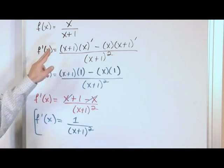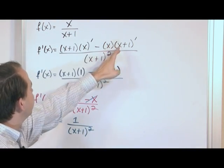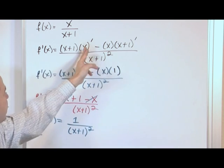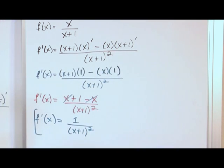So again, bottom times the derivative of the top minus the top times the derivative of the bottom over the bottom squared. And at that point, you just take those derivatives the way we've discussed already and flow through with everything else.